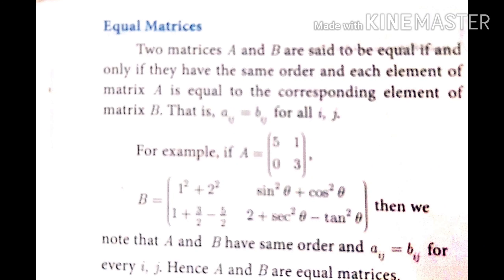The tenth type is equal matrices. Matrices A and B are said to be equal if and only if they have the same order and each element of A equals the corresponding element of B — that is, aᵢⱼ = bᵢⱼ. For example, A = [5, 1; 0, 3] and B = [1²+2², sin²θ+cos²θ; 1+3/2-5/2, 2+sec²θ-tan²θ], which simplify to the same values. Hence A and B are equal matrices.